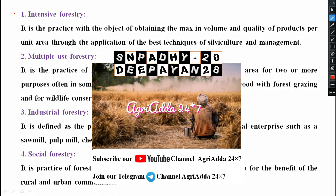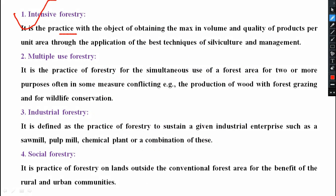The first type is known as intensive forestry. It is the practice with the objective of obtaining maximum volume and quality of product per unit area through the application of the best techniques of silviculture and management. That means we intensively go for this forestry to maximize both quality and quantity of the product coming out of silviculture — that is, the growing of forest plants.